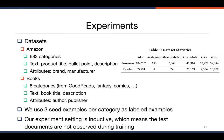Now let's look at the experiments. We have two datasets. The first is an Amazon product categorization dataset collected by us, with 683 categories — much larger than most datasets used in related works, making it a very challenging benchmark for the minimally supervised setting. The text part includes product title, bullet points, and description; attributes include brand and manufacturer. The second is a book dataset with eight categories of different book genres; text includes title and description, attributes include author and publisher. For all datasets, we use three seed examples per category, and our experiment setting is inductive — test documents are not observed during training.